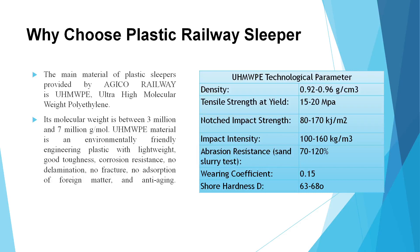Why choose plastic railway sleepers over others? They have a long life, are eco-friendly, have the greatest strength, and their scrap value is very good. Their molecular weight is between three million to seven million. They are environment-friendly, have good toughness, no fracture, no absorption, are light in weight, and have less vibration compared to all other railway sleepers.